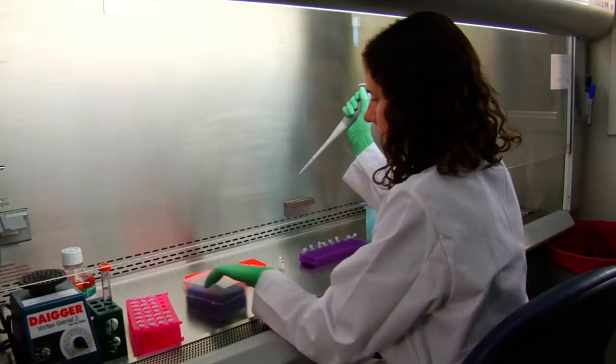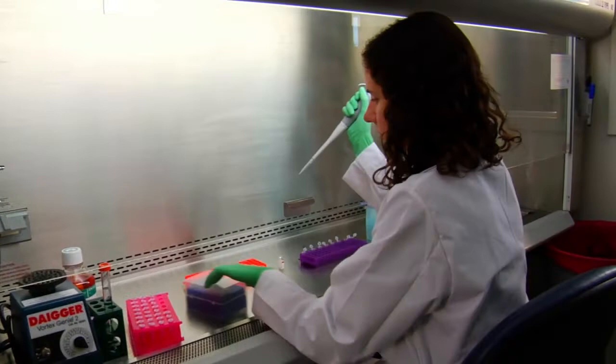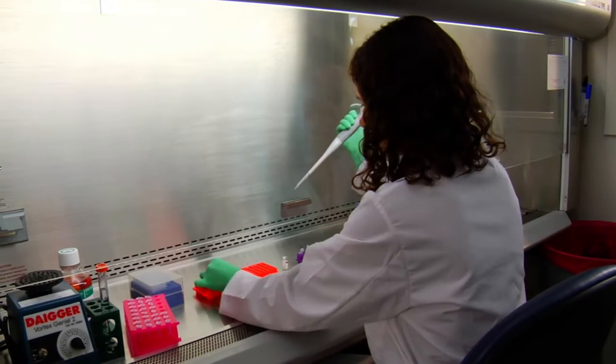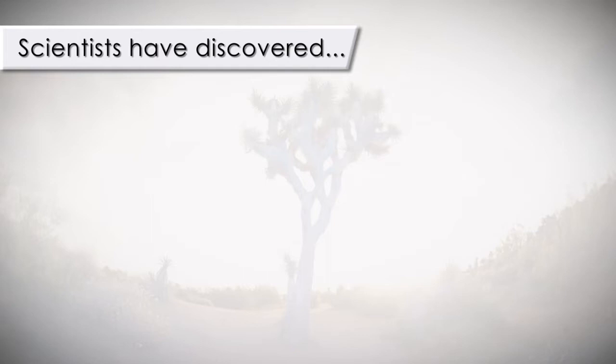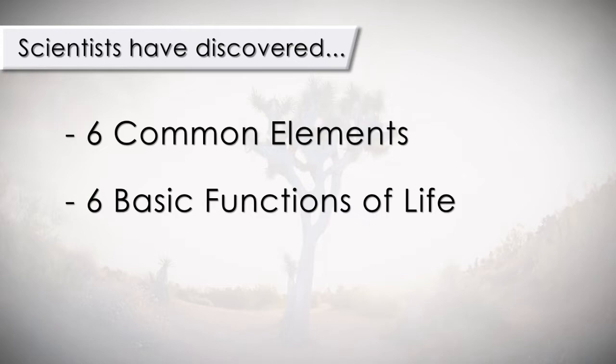The purpose of the health science technology principles course is to only address what scientists so far have discovered. So far, scientists have discovered that there are six common elements that make all life possible on this planet, and that all living organisms here must satisfy six basic functions of life — that is if they are to sustain life throughout its assigned life cycle.